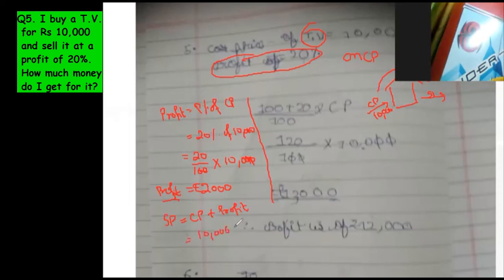So this is method number 2. The answer is rupees 12,000. Both methods are absolutely fine. Whatever you understand, you do it in the exam. But right now, copy both methods.